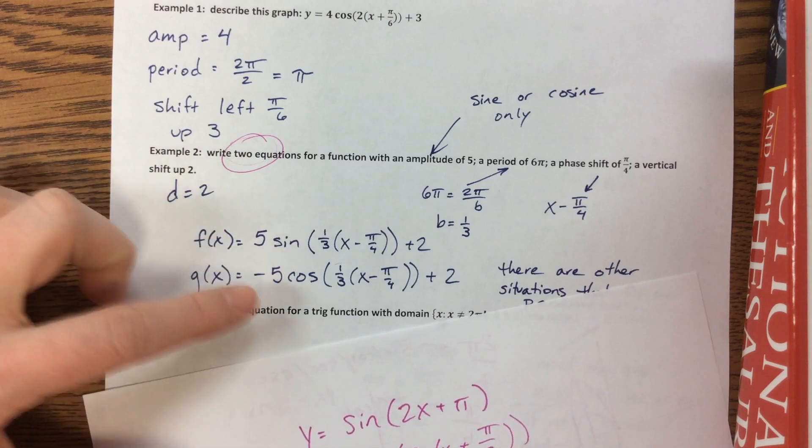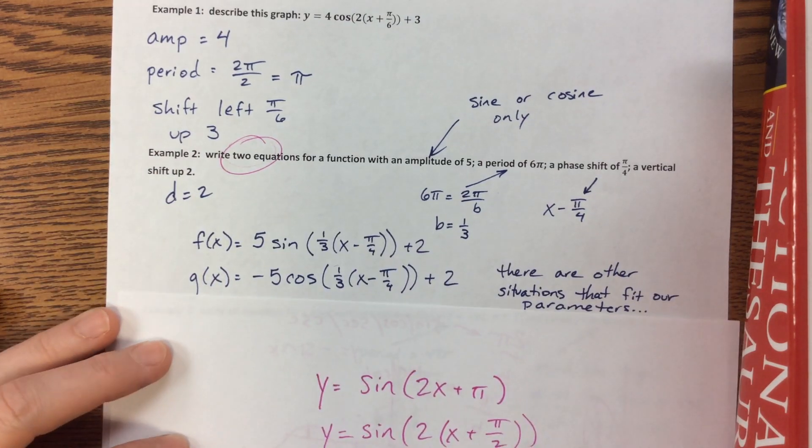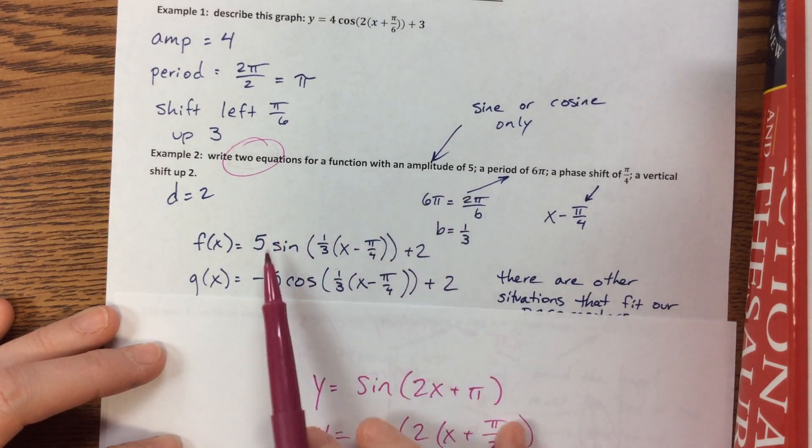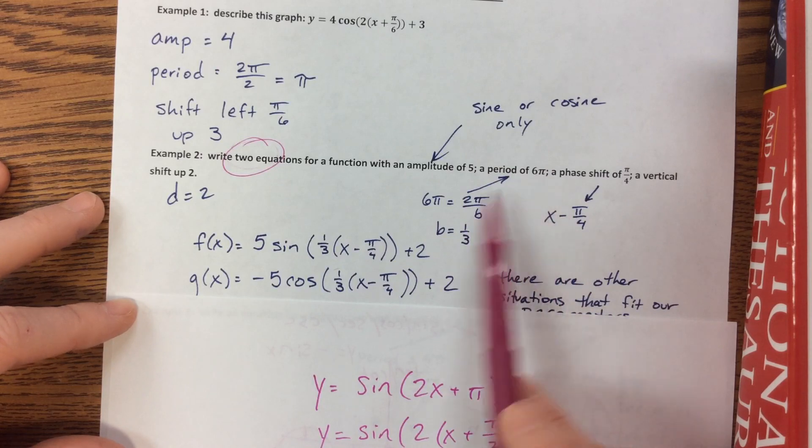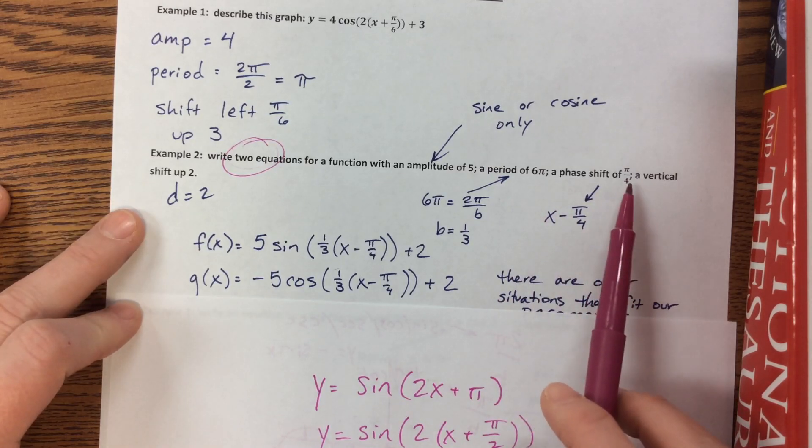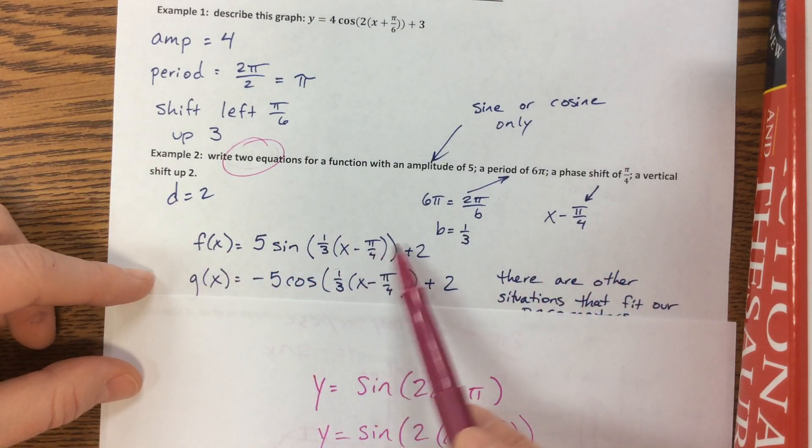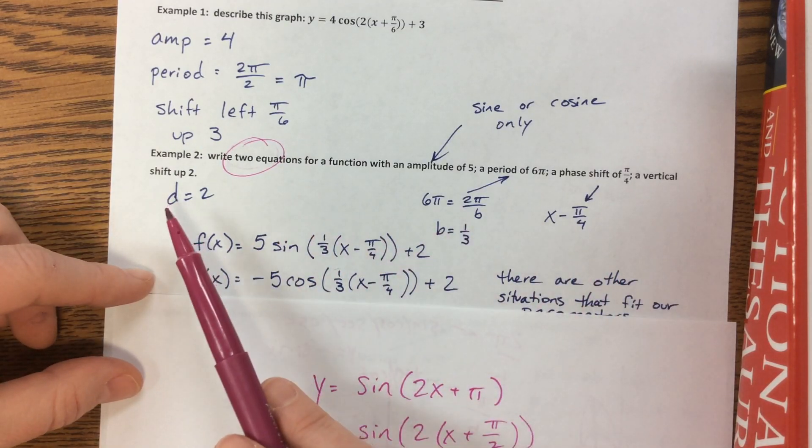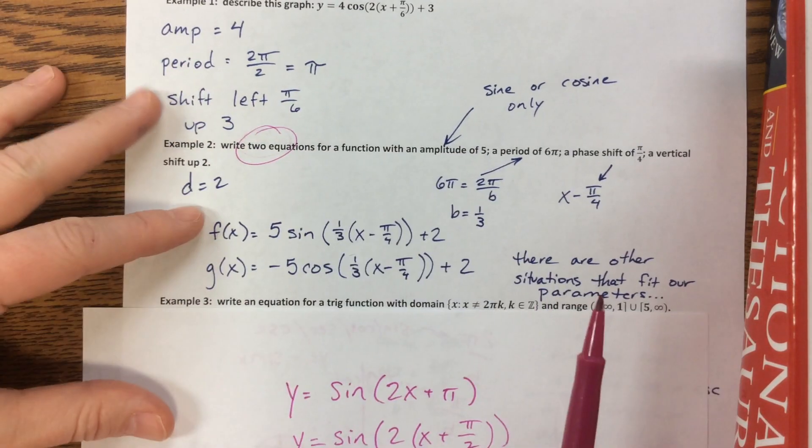So because it says amplitude, we know that the only two parent functions that have amplitude are sine and cosine. And so it has to either be sine or cosine, and I ended up doing both. I said 5, since it's the amplitude of 5, you can either use 5 or negative 5. I did both of those. I used 1 as sine, 1 as cosine. And then I looked at this and said, it tells me the period is 6π. So 6π needs to be equal to 2π over b, therefore b has to be 1 third. A phase shift of π over 4 tells me we're moving in the positive direction, which means that it becomes x minus π over 4 in both of those, and then a vertical shift up of plus 2. And likewise, I said there are other situations, but those are two correct ones.